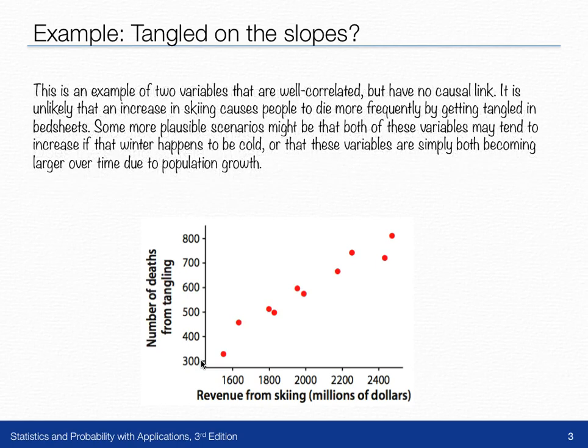What we see here is an example of two variables that are well correlated, but really one doesn't cause the other. This is called spurious correlation, and you can see it in a lot of different places. It's unlikely that an increase in skiing is causing more people to die by getting tangled in bedsheets.